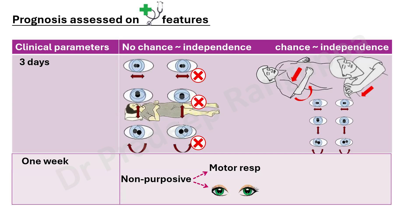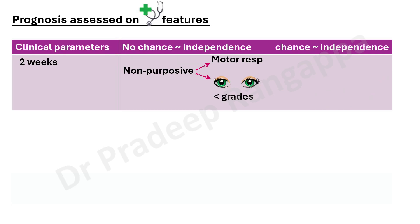Extending beyond three days: at the end of one week, if there is non-purposive motor movement and no purposive eye contact, they may not recover to a functional independent state. By one week, if they are obeying commands, they are doing well. Non-purposive motor movements and no purposive eye contact at end of one week suggests they may not regain full functional independence. At the end of two weeks, if non-purposive motor response is still present and eye movements have not improved, the same poor prognosis applies.